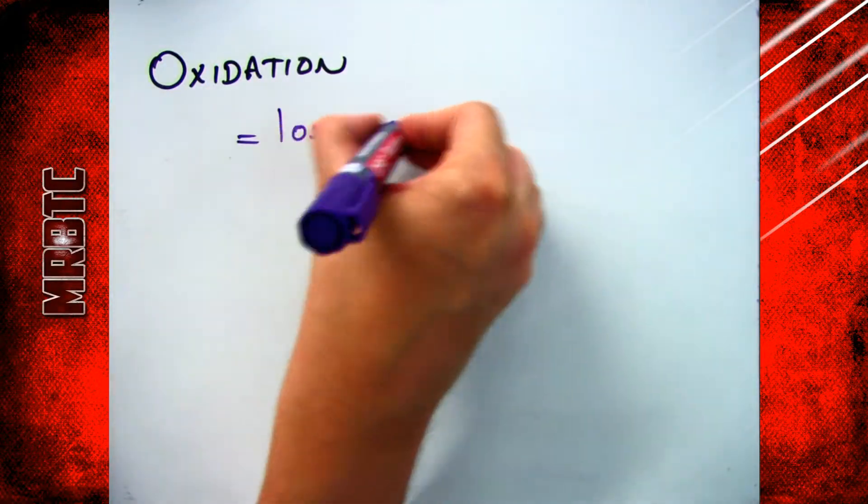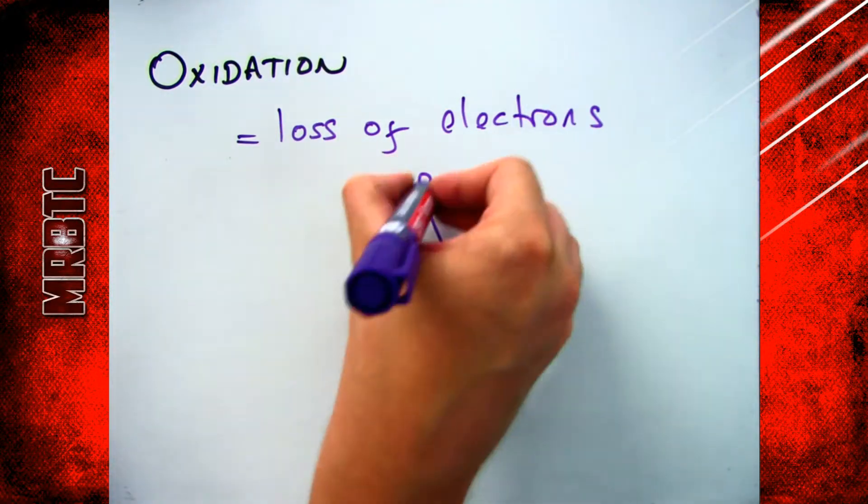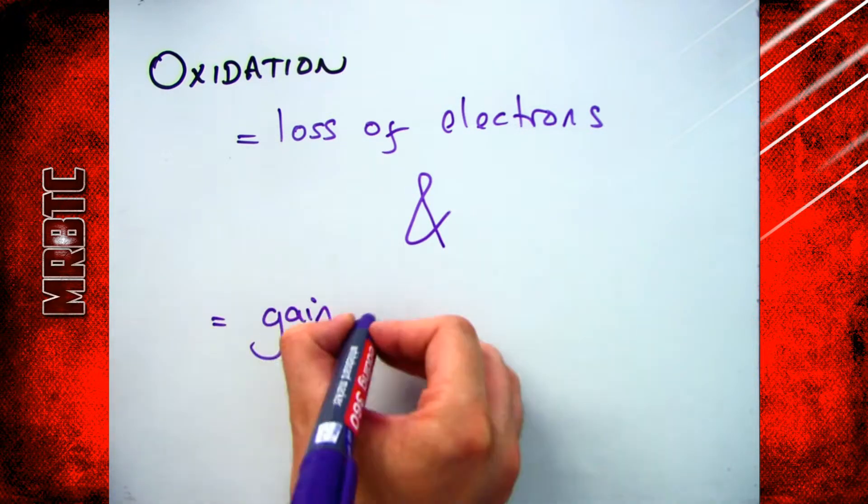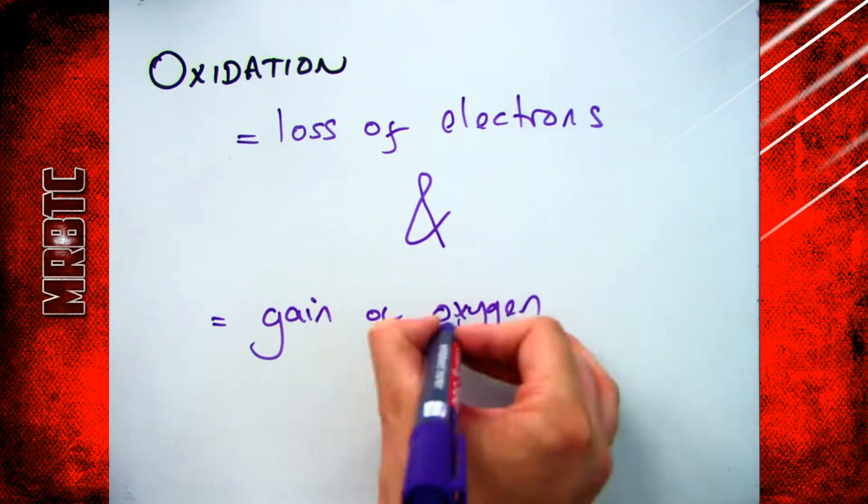There are two definitions for oxidation then. The first one, which we've already covered, is that it's the loss of electrons and the second one being that it's the gain of oxygen. That's what we're going to focus on today.